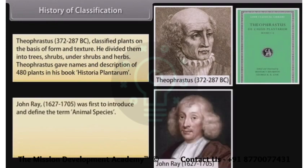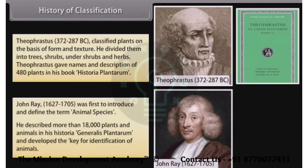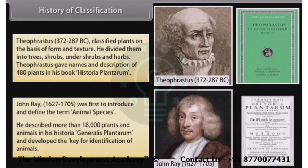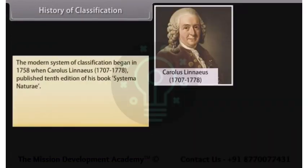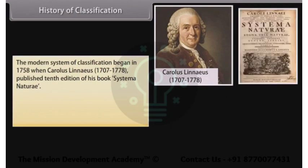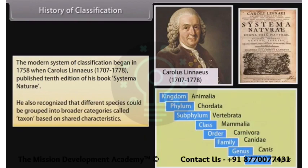John Ray (1627–1705) was the first to introduce and define the term animal species. He described more than 18,000 plants and animals in his Historia Generalis Plantarum and developed a key for identification of animals. The modern system of classification began in 1758 when Carolus Linnaeus (1707–1778) published the 10th edition of his book Systema Naturae. He recognized that different species could be grouped into broader categories called taxon, based on shared characteristics.